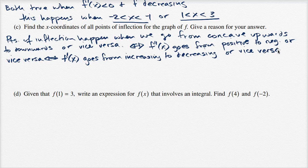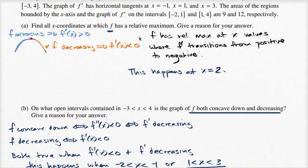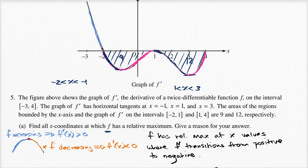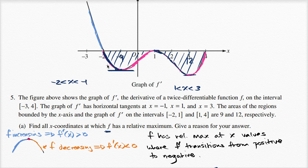I'm using a lot of 'vice versa' here. I wanted to think of it in terms of f' because we have the graph of f'. So f' goes from increasing to decreasing, or vice versa — we could also go from decreasing to increasing. Over here, f' is decreasing, decreasing, and then it increases. So we have a point of inflection right over here, right when f' of x is zero. That's because f' is differentiable, so the derivative is zero right at that point of inflection.